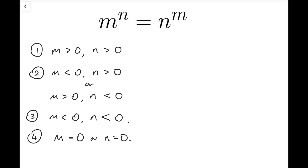The second case says that one of them is positive while the other is negative. Which is positive and which is negative is not that important, because the equation itself is symmetrical. So I'm going to focus on the case that m is negative and n is positive.